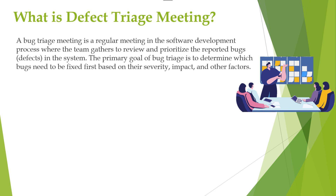Next, the team assesses the severity of each bug. Severity is usually classified as critical, major, or minor based on its impact on the system. Then they perform prioritization — bugs are prioritized based on severity, that is, the impact on the system, and also based on factors like customer priority or project deadlines.